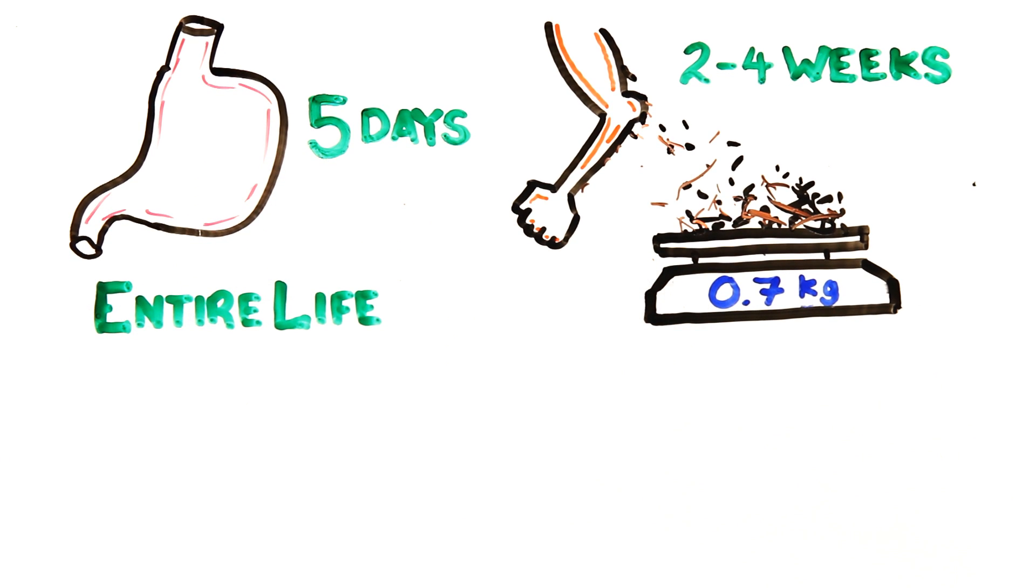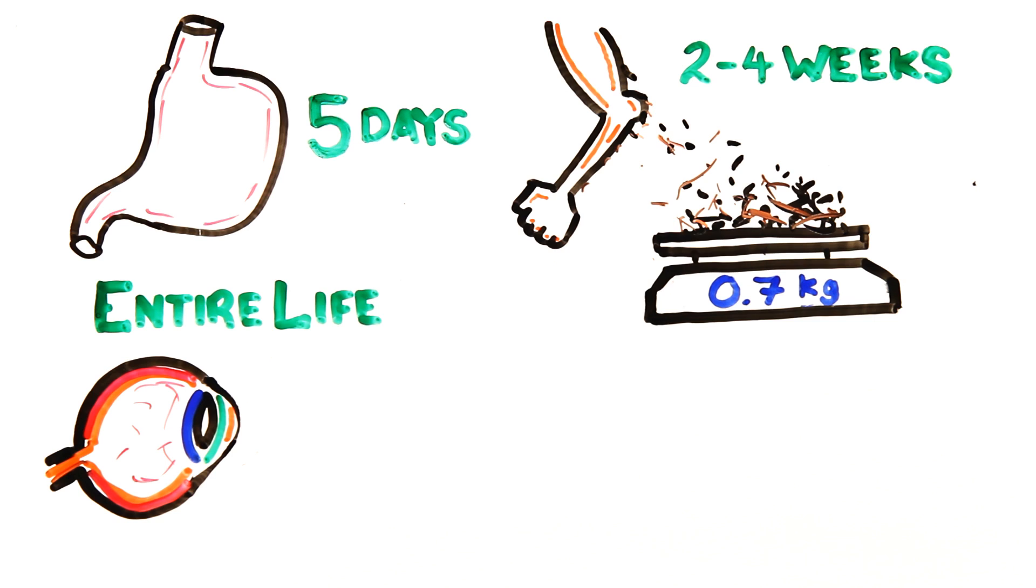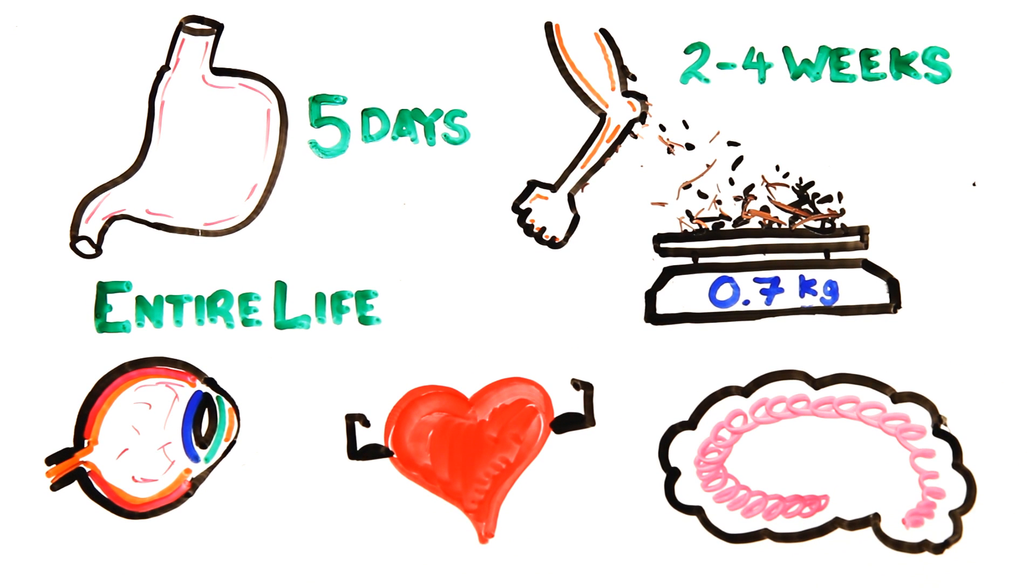Only some cells have been with you your entire life: those of the inner lens of the eye, muscle cells of the heart, and the neurons of the cerebral cortex in your brain, which is largely responsible for your memory.